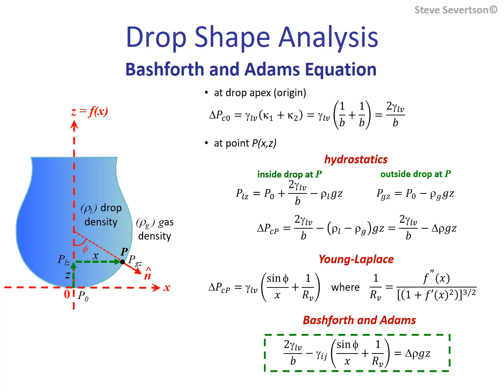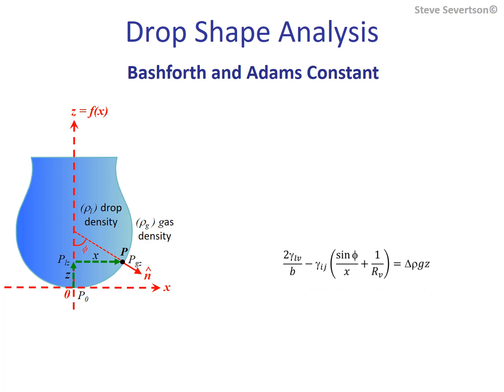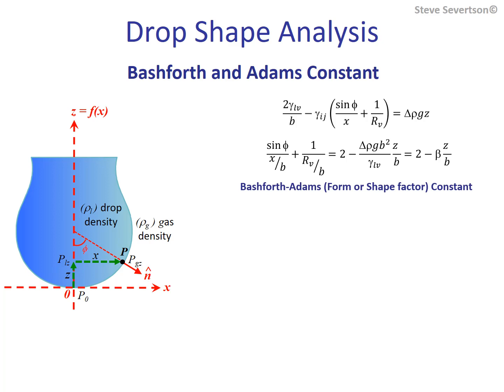Rearranging produces a seemingly simple form of the equation containing the Bashforth and Adams constant denoted with beta, sometimes referred to as a form or shape factor. Like the capillary constant, this constant gauges the balance of gravitational forces to those resulting from surface tension. Unlike the capillary constant, it specifically takes into account the shape under consideration using the radius of curvature at its apex. It is essentially a gauge of the ratio of liquid weight pushing down on the surface to the resistance provided by surface tension forces.